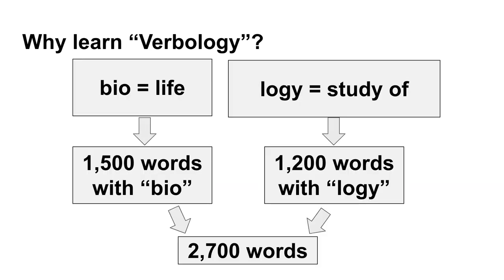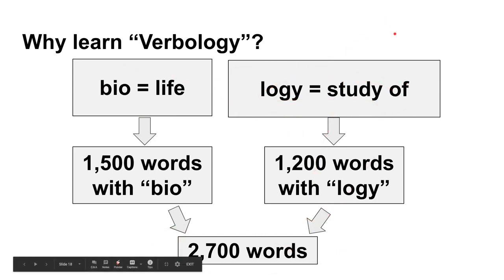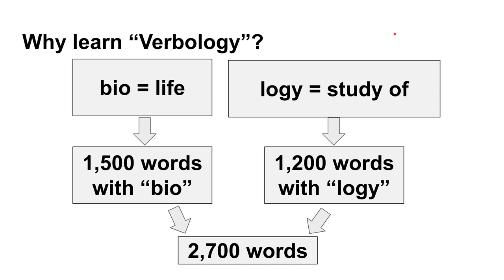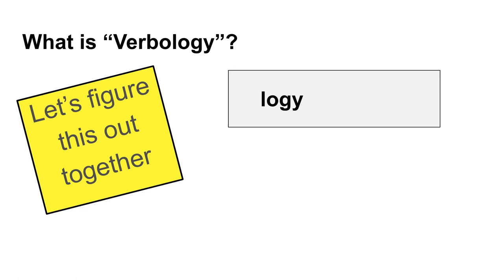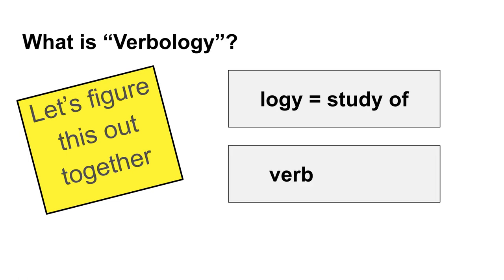So let me ask you: would you rather understand two sub-parts — 'bio' and 'logi' — to understand over 2,700 other words, or would you rather memorize 2,700 words? I think it's pretty much a no-brainer. So let's actually take a look at the word 'verbology.' We all know what 'logi' means — the study of. Now what does the sub-part 'verb' mean? A lot of you might think it means action, because the verb is the action in the sentence. But historically, from Greek and Latin sub-parts, 'verb' actually means word or words. So verbology: the study of words.